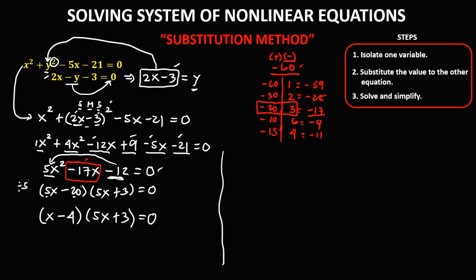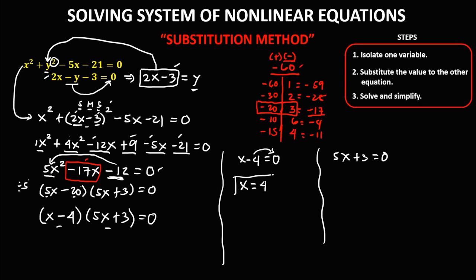To solve for x, we equate each factor to zero. From x minus 4 equals 0, transposing gives x equals positive 4. From 5x plus 3 equals 0, transposing gives 5x equals negative 3, then dividing both sides by 5 gives x equals negative 3 over 5. These are the two values for x.